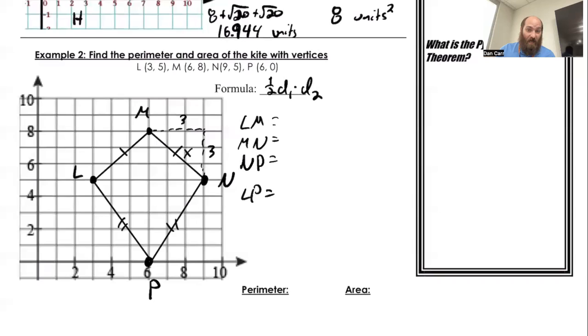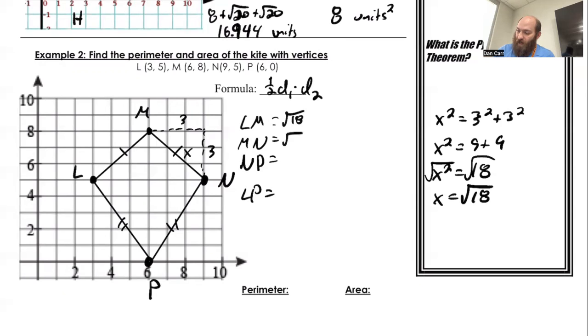So that is going to give me MN and LM. So the first two on there. So we'll say X squared is equal to 3 squared plus 3 squared. So X squared is equal to 9 plus 9. X squared is equal to 18. So square root of that. I'll just have the square root of 18 for now. So that's both this one and this one.